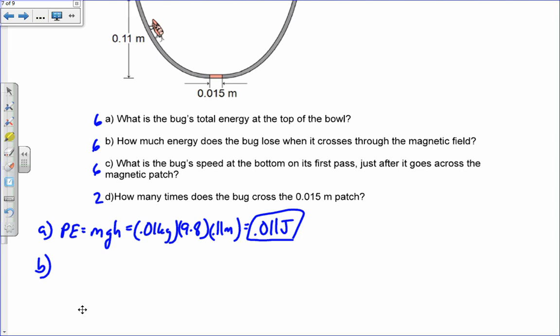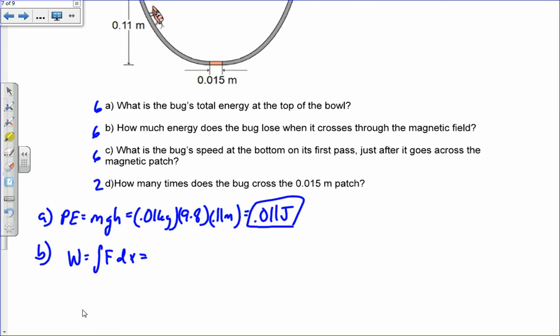For part B, how much energy does the bug lose when it crosses through the magnetic field? We're looking at this function work done by that force is equal to the integral of F dx. The force is given by this function 2x. So it's the integral of 2x dx. And these are the limits of integration from 0 to 0.015 because that's the distance over which it acts. That's going to be 2x squared over 2 from 0 to 0.015, which is 2.25 times 10 to the minus 4.